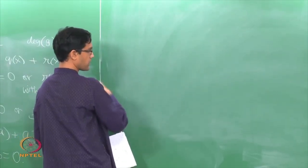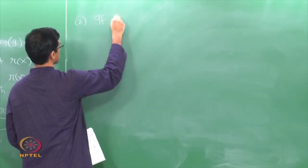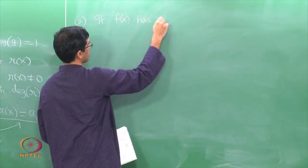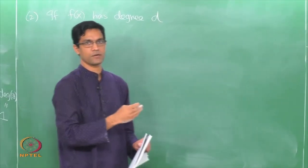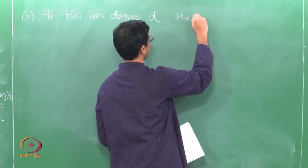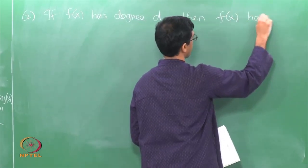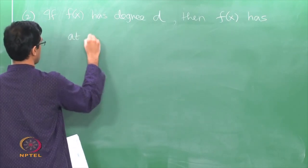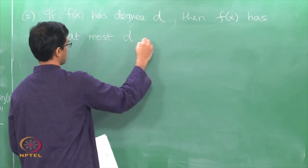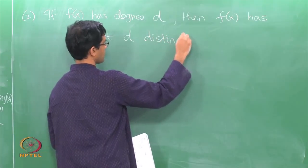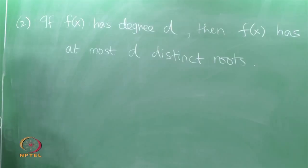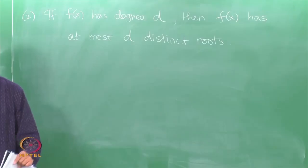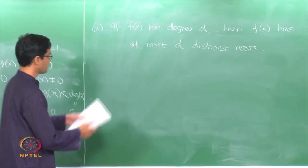That is the first application — we have just completed the proof. The second application says: if f(x) has degree d, then it has at most d distinct roots. For instance, a polynomial of degree 10 can have at most 10 different roots; it cannot have 11 or 12 or anything higher.